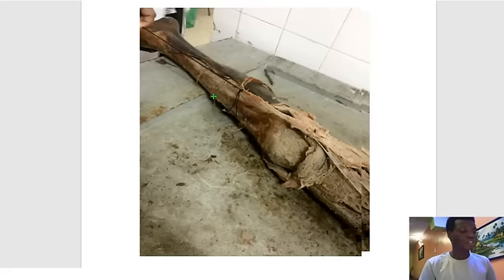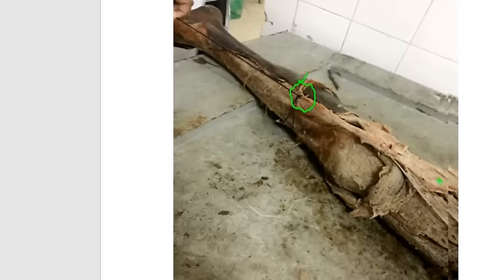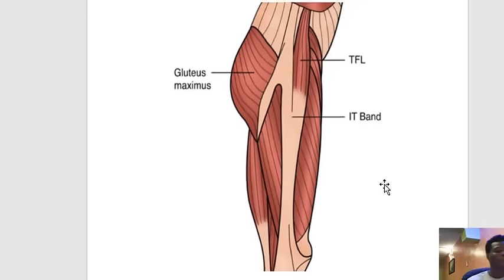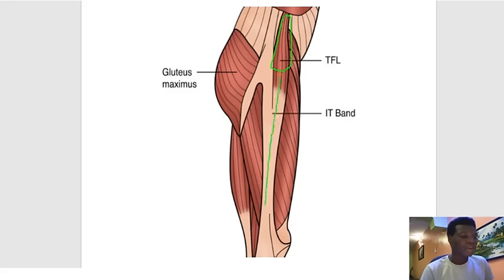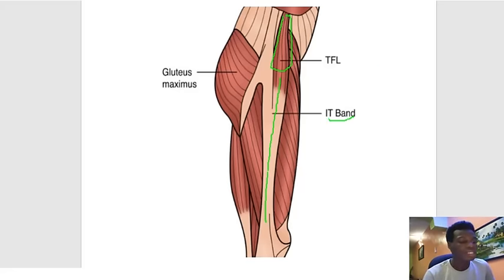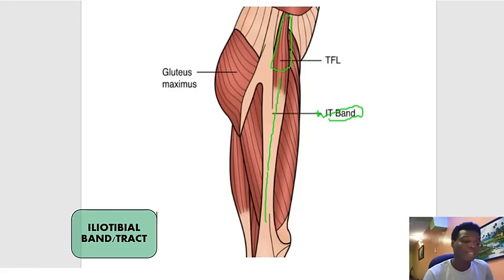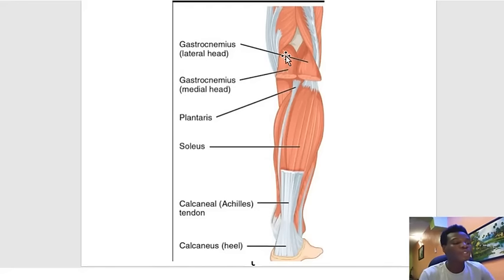The next structure is coming all the way from the thigh and giving rise to a thickened fascia. The muscle is the tensor fasciae latae, and it continues as a thickened fascia or tendon called the iliotibial band.